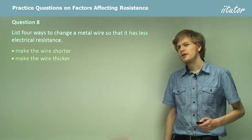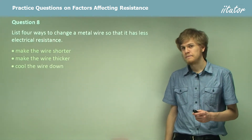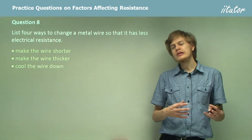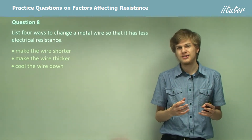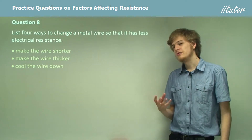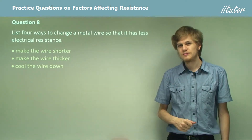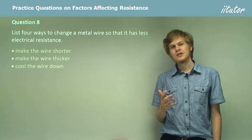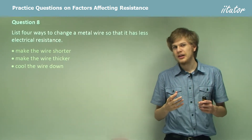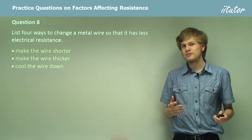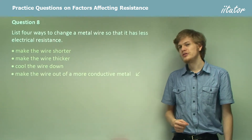For a harder one: we can cool the wire down. Cooling the wire decreases the vibrational energy of the atoms in the metal lattice, making it harder for electrons to bump into them, which means less resistance. Finally, we can make the wire out of a more conductive material.